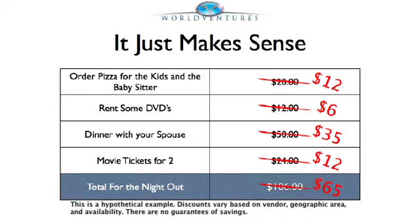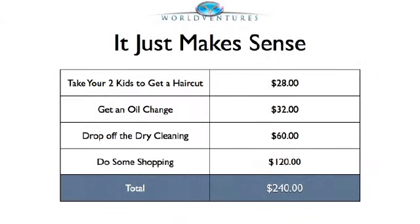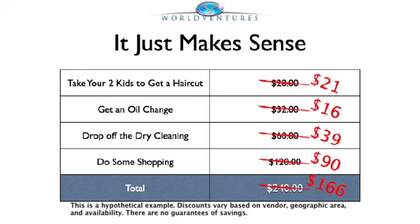Let's say that you also go out and you use some common services like you'd use on any given week. You go get your kids a haircut, you get an oil change, you drop off the dry cleaning and you do some shopping. That would be a $240 spend for that week, but not as a DreamTrips Life member. Instead of $240, that's $166 instead.